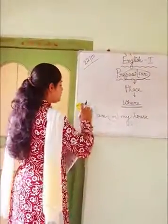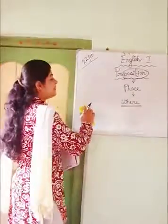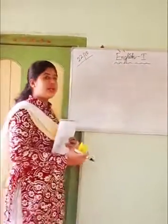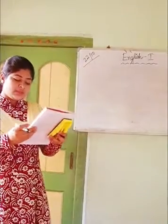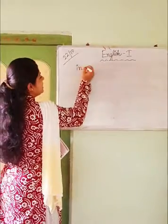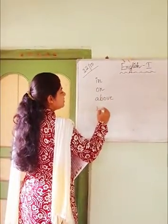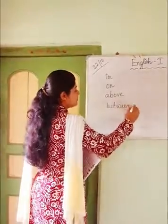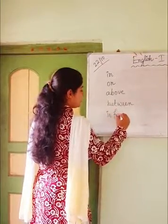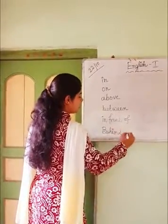I am going to give you the list of prepositions. Come to page number 34 in your English Elementary Grammar book. In page number 34 we are going to get these prepositions like: in, on, above, between, in front of, behind, and so on.